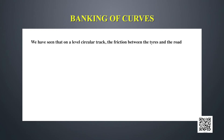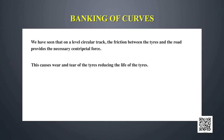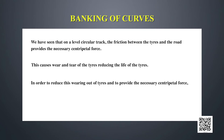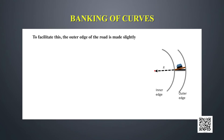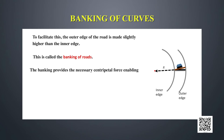Banking of curves: on a level circular track, friction between tires and road provides the centripetal force, causing wear and tear of the tires. To reduce tire wear and provide the necessary centripetal force, roads are banked at curves — the outer edge of the road is raised with respect to the inner edge through a small angle θ. This banking provides the necessary centripetal force and enables vehicles to negotiate curves safely.